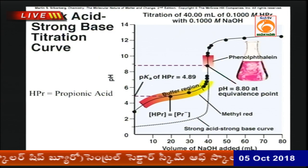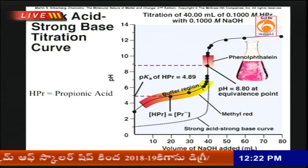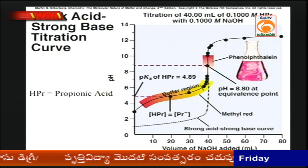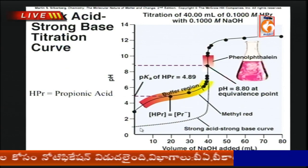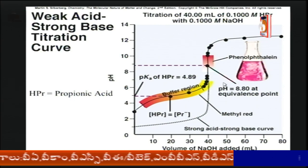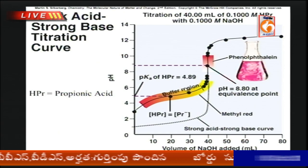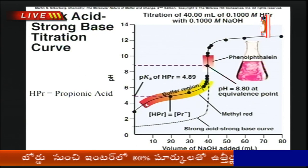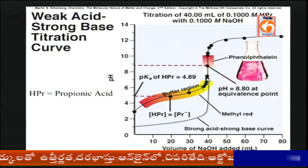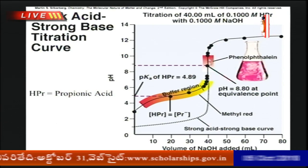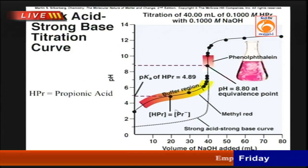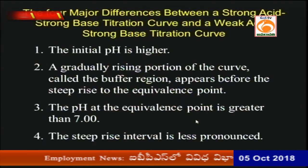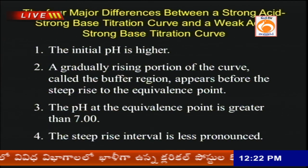For a titration between a weak acid — such as propionic acid or oxalic acid — and a strong base like sodium hydroxide, a buffer region appears in the curve and the pH range falls between 8 to 10. Therefore, phenolphthalein is a suitable indicator to identify the equivalence point in this weak acid–strong base titration.